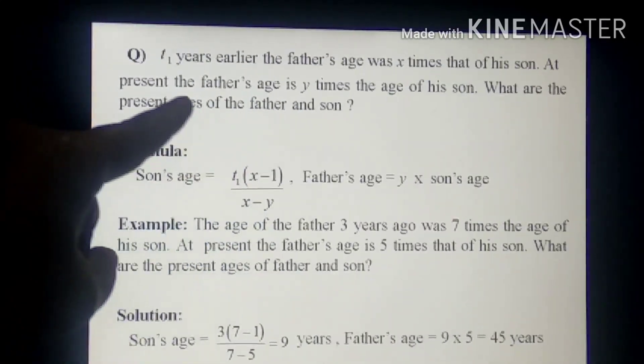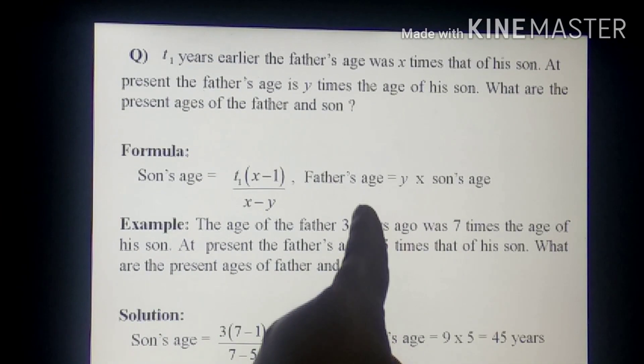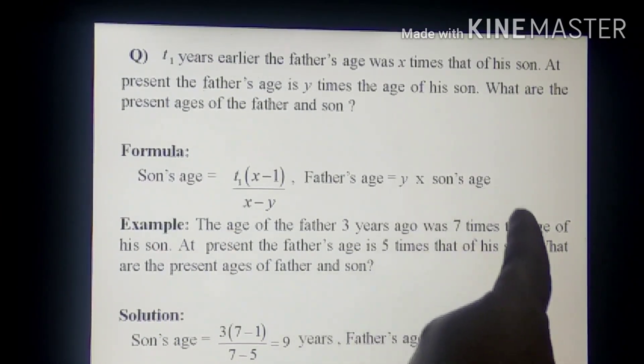Here Y is the present age of the father which is Y times that of his son. And definitely father's age will be Y times that of his son's age.